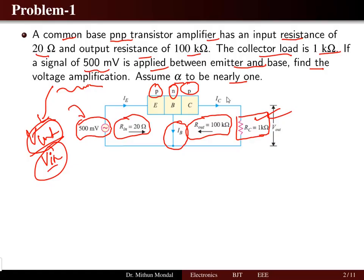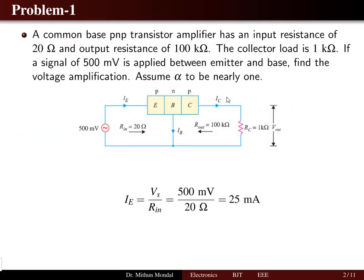Output voltage can be calculated from Ohm's law as the product of current multiplied by the collector resistance. First, we determine the emitter current from the input resistance and the supply voltage of 500 millivolts. The emitter current is given by the supply voltage divided by the resistance in accordance with Ohm's law, which comes to be 25 milliamps.